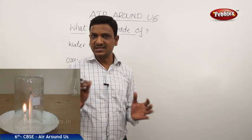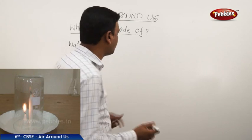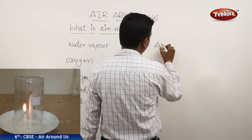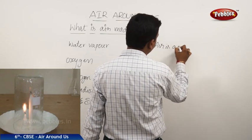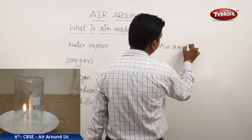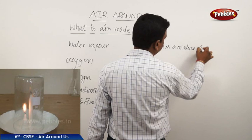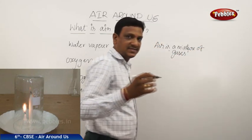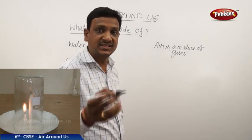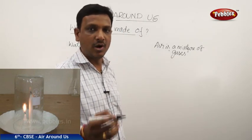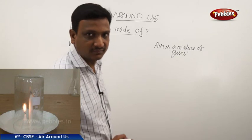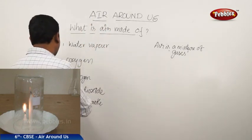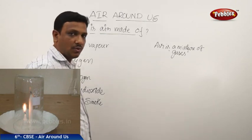Air is a mixture of gases — this statement you have to remember forever; it is very important. Air is a mixture of so many gases. Among those gases, a few important ones are: water vapor, oxygen, nitrogen, carbon dioxide, and dust and smoke. The combination of all these is the air.